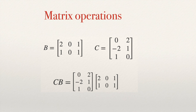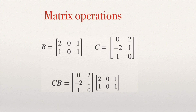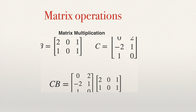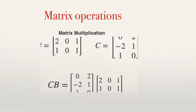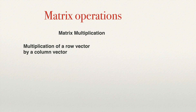I continue in this video explaining matrix operations. In this case, I'm going to explain how to make a matrix multiplication. To do that, I will start with the special case when we have a row vector and a column vector multiplying.